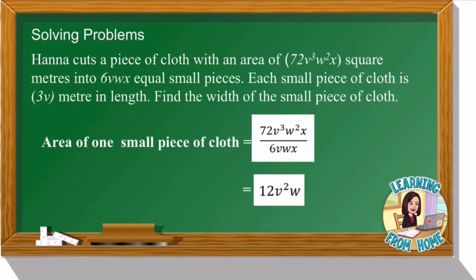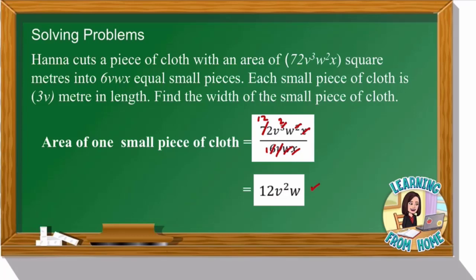To find the area of one small piece, we divide the total area by the number of pieces: 72v³w²x² ÷ 6vwx. We cancel x with x, one w from w², leaving w², and divide v³ by v, leaving v². Then 72 ÷ 6 = 12. So the area of one small piece of cloth is 12v²w square meters.